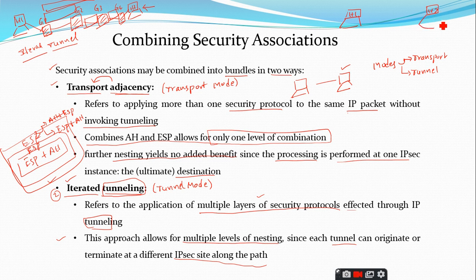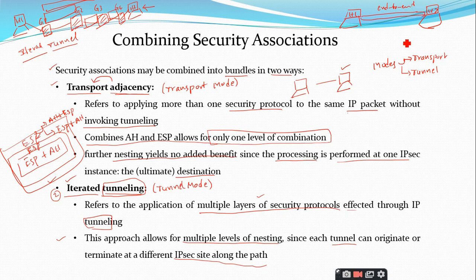In tunnel mode, decryption is handled by gateways or end devices, so no burden is placed on the destination host. You can have multiple levels of nesting where tunnels originate and terminate at different points. In transport mode, security is end-to-end between two hosts, so nesting yields no benefit and burdens the destination. These are the two security association bundling approaches: transport adjacency and iterated tunneling.